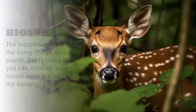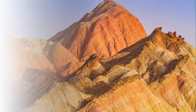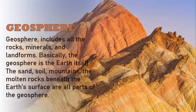From the word bios meaning life, the biosphere covers all the living things on our planet. Every living thing you can think of, even the tiniest ones, are part of the biosphere. The geosphere, on the other hand, includes all the rocks, minerals, and landforms — basically, the geosphere is the Earth itself. The sand, soil, mountains, and the molten rocks beneath the Earth's surface are all parts of the geosphere.